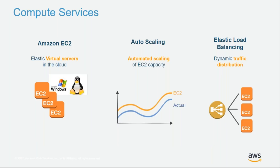For a deeper look at services, the fundamentals are compute, storage, and network. Under compute, we have three basic services. Amazon EC2 provides elastic virtual servers on the cloud in multiple flavors depending on workload type — over six or seven families of virtual machines for multiple use cases, including RAM-intensive workloads and HPC and machine learning with FPGA support. A key feature is elasticity through auto-scaling, which automatically scales capacity as load increases or decreases without guessing capacity.